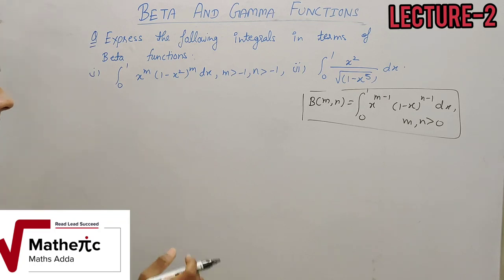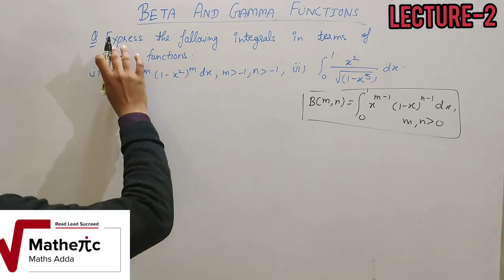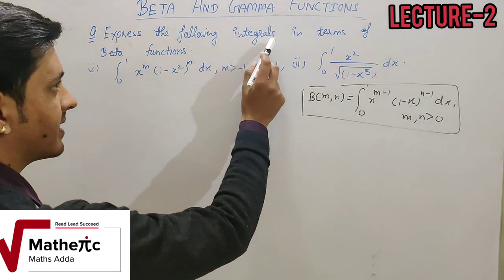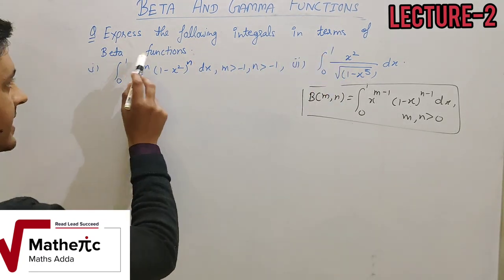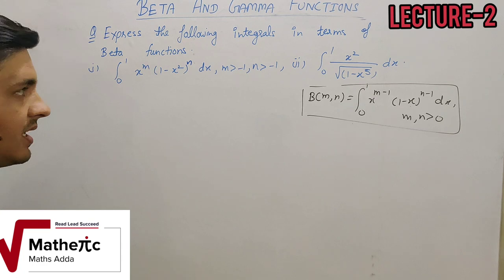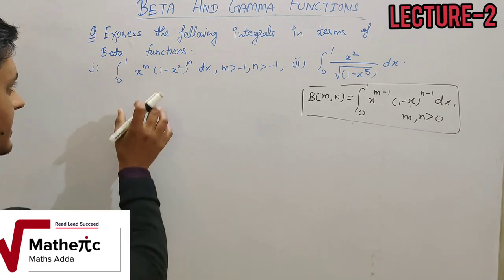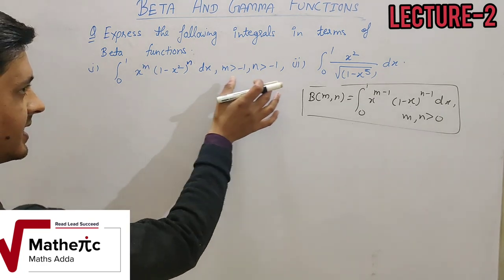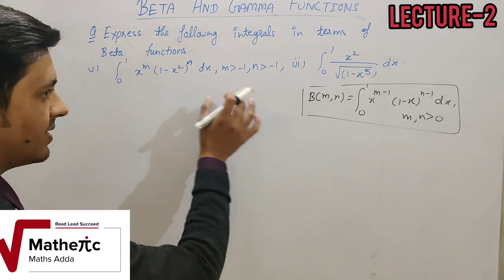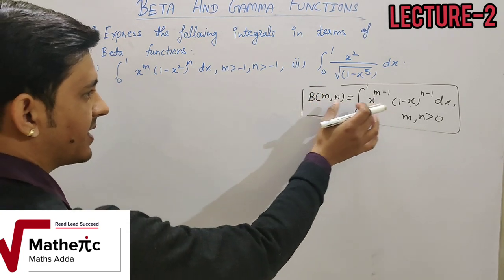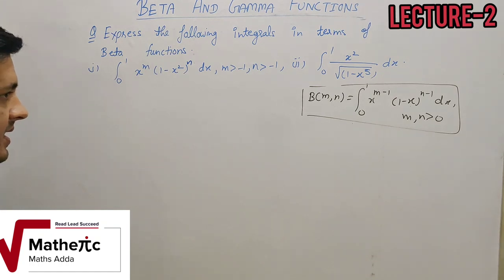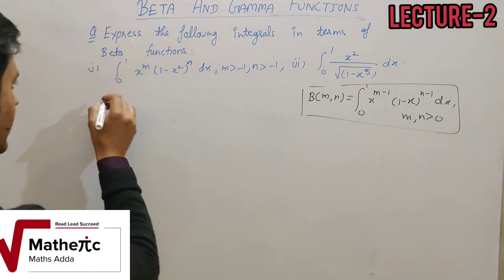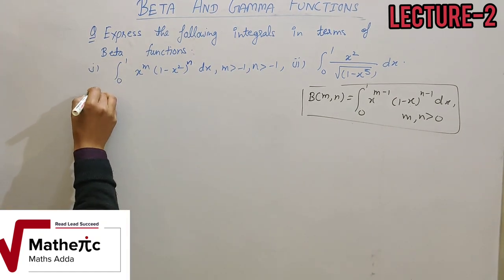The first task is to express the following integrals in terms of beta functions. You need to convert these integrations into the form beta(m,n). The first numerical is now presented.